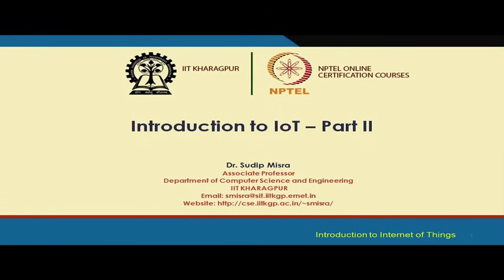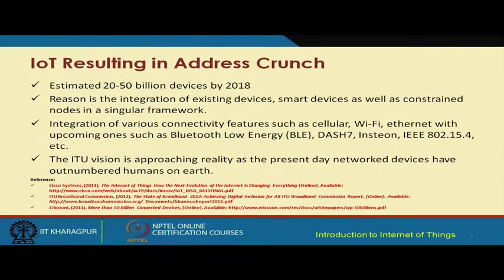We are going to continue with the basics of Internet of Things. We have already seen that in the future it is estimated that the number of IoT devices is going to be very large. As per one study, by 2018 we are going to have twenty to fifty billion devices that are going to be internetworked, with so many different applications. These devices are going to be made smart, leading to an explosion in the number of devices connected to the Internet of Things.